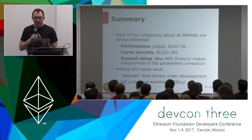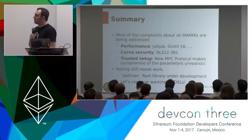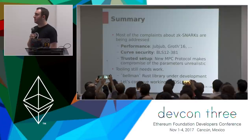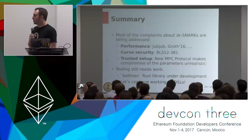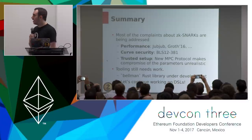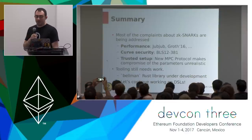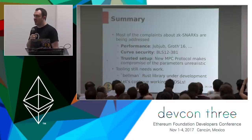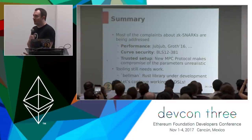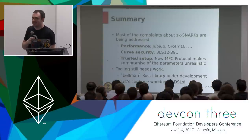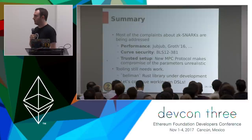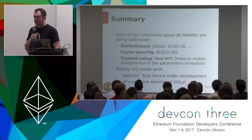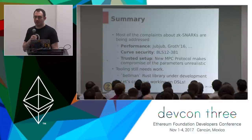As a summary, most of the problems with ZK-SNARKs that people point out today are being addressed. On performance, we've made massive reductions in proving time and memory. On curve security, we're bumping security margins up without compromising performance much. And on the trusted setup, with this new multi-party computation protocol and hundreds or thousands of participants where only one needs to be honest, it becomes unrealistic that everyone could have been compromised. I think this helps make the case that trusted setups are reliable, at least for now.